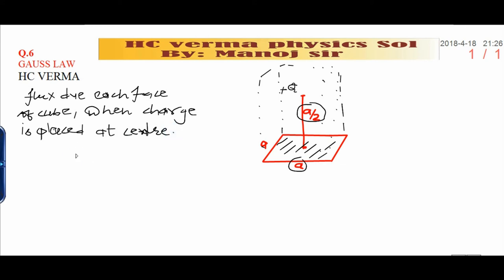This is called body-centered cubic structure, you know, in chemistry. Then, net flux can be calculated by this way. Net flux is, because there are 6 faces, out of 6 only 1 face we are going. 1 by 6 into Q upon epsilon naught. This is the answer.